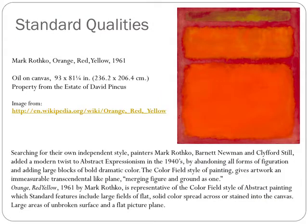Searching for their own independent style, painters Mark Rothko, Barnett Newman, and Clifford Still added a modern twist to Abstract Expressionism in the 1940s, by abandoning all forms of figuration and adding large blocks of bold, dramatic color. The color field style of painting gives artwork an immeasurable, transcendental-like plane, merging figure and ground as one.